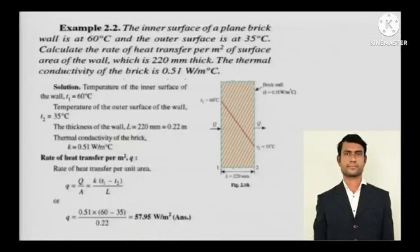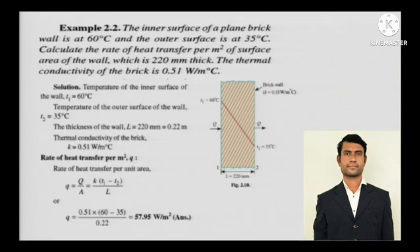The inner surface of a plain brick wall is at 60 degree Celsius and the outer surface is at 35 degree Celsius. Calculate the rate of heat transfer per meter square of surface area of the wall, which is 220 mm thick. The thermal conductivity of the brick is 0.51 watts per meter degree Celsius.